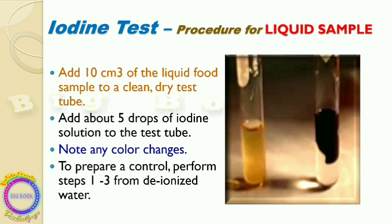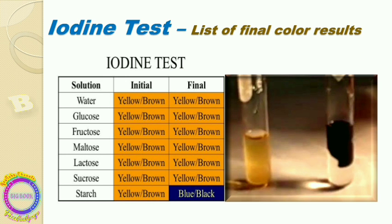In liquid sample testing, there is also a control, called the blank. In place of the sample, deionized or distilled water is taken, and iodine drops are added to it as well. This allows you to compare the reaction happening in the sample test tube versus the control test tube. The sample test tube will show the result — the dark blue color.